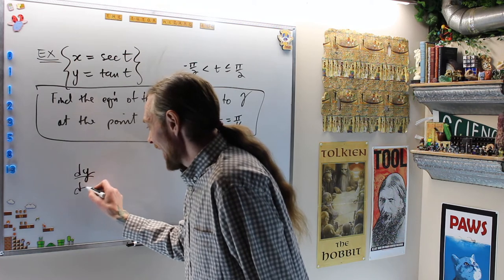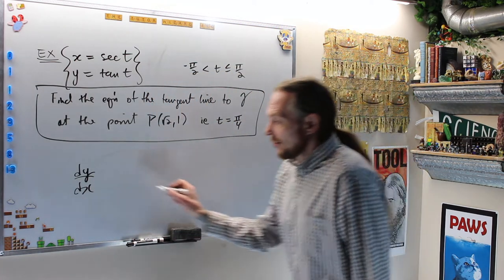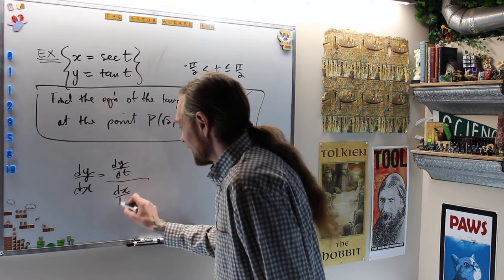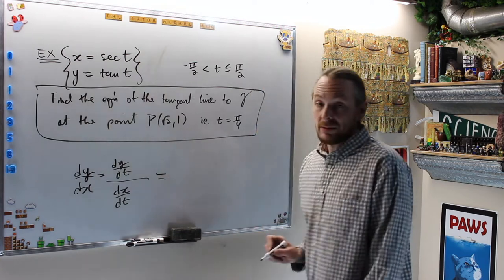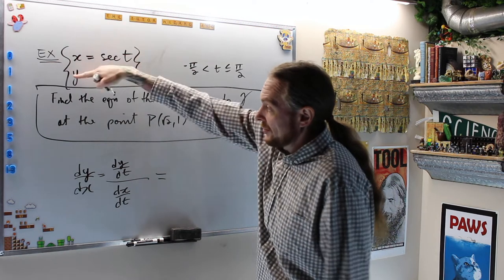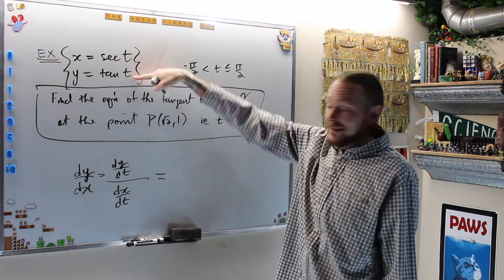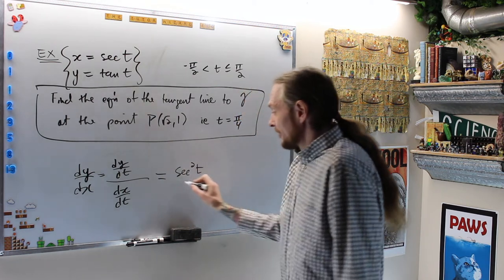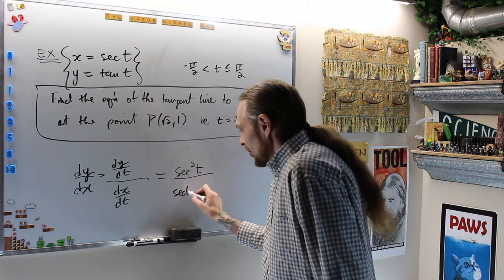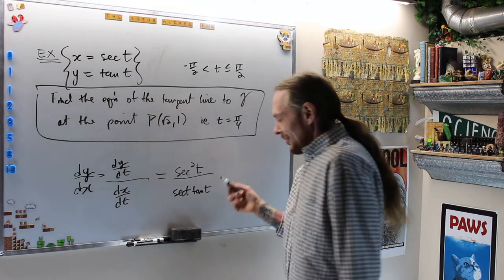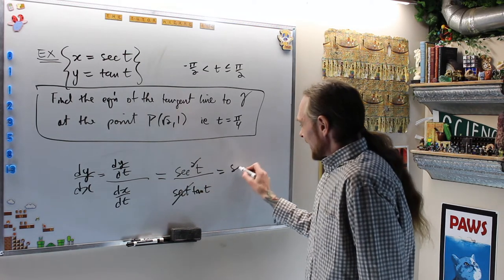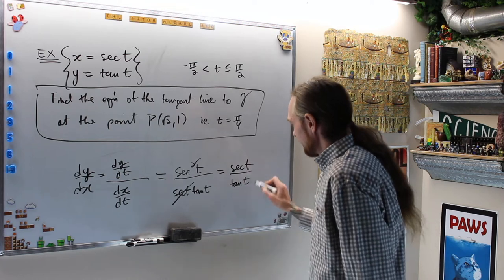What is that? dy/dx is equal to dy/dt over dx/dt. That is equal to dy/dt is, what's the derivative of tan? That's correct, secant squared t. What's the derivative of secant? That's correct. Secant tan x. And then one of these is going to cancel, and so we're going to get secant t over tan t.